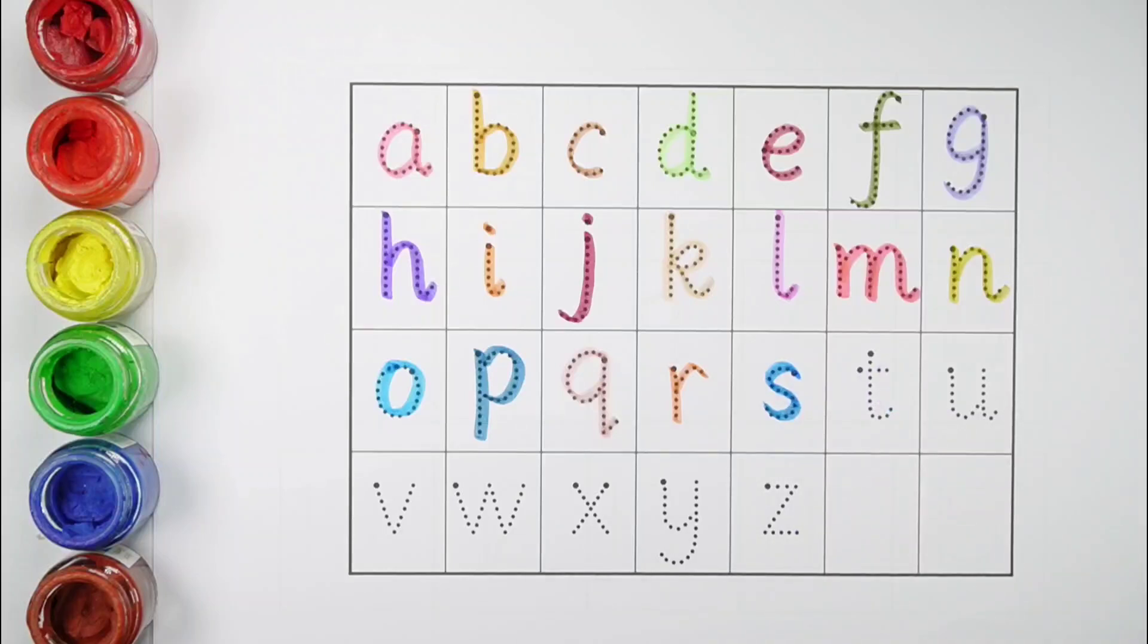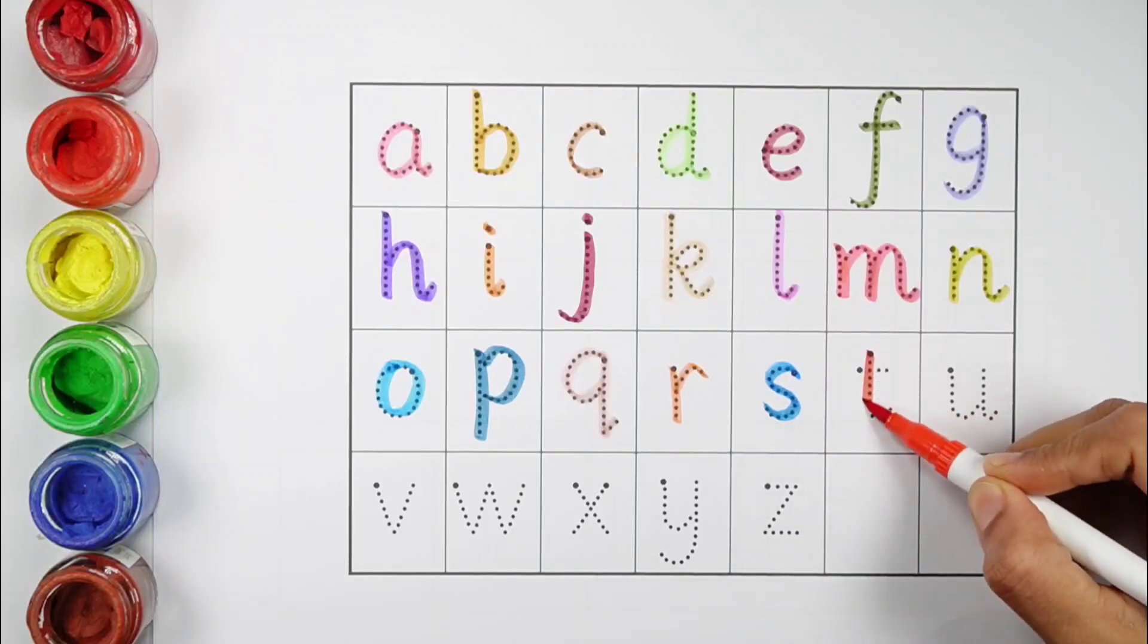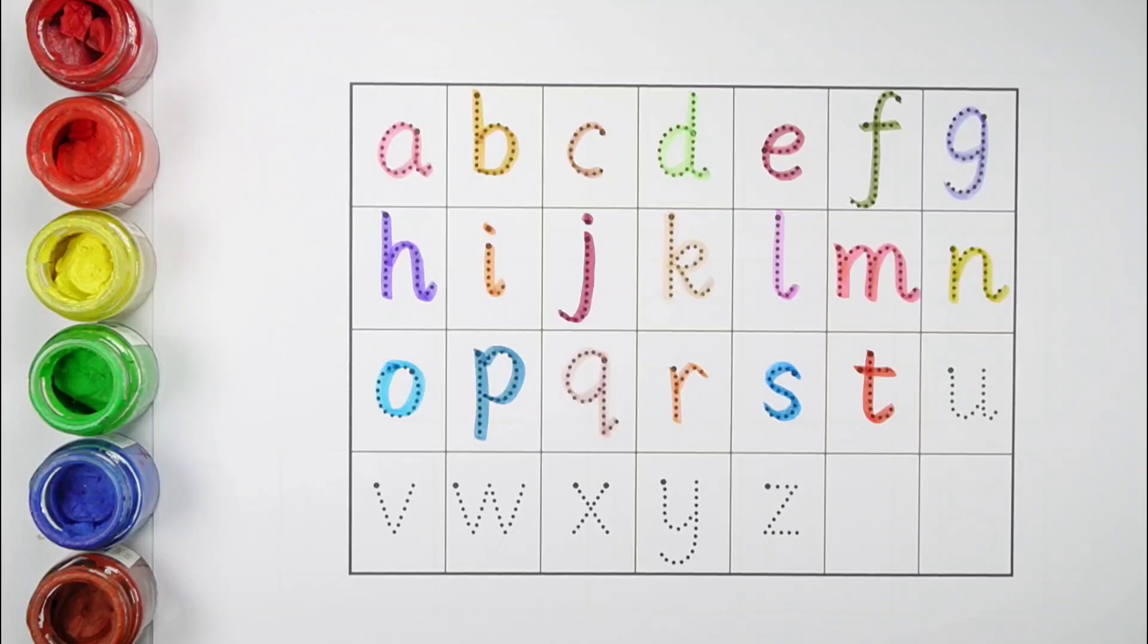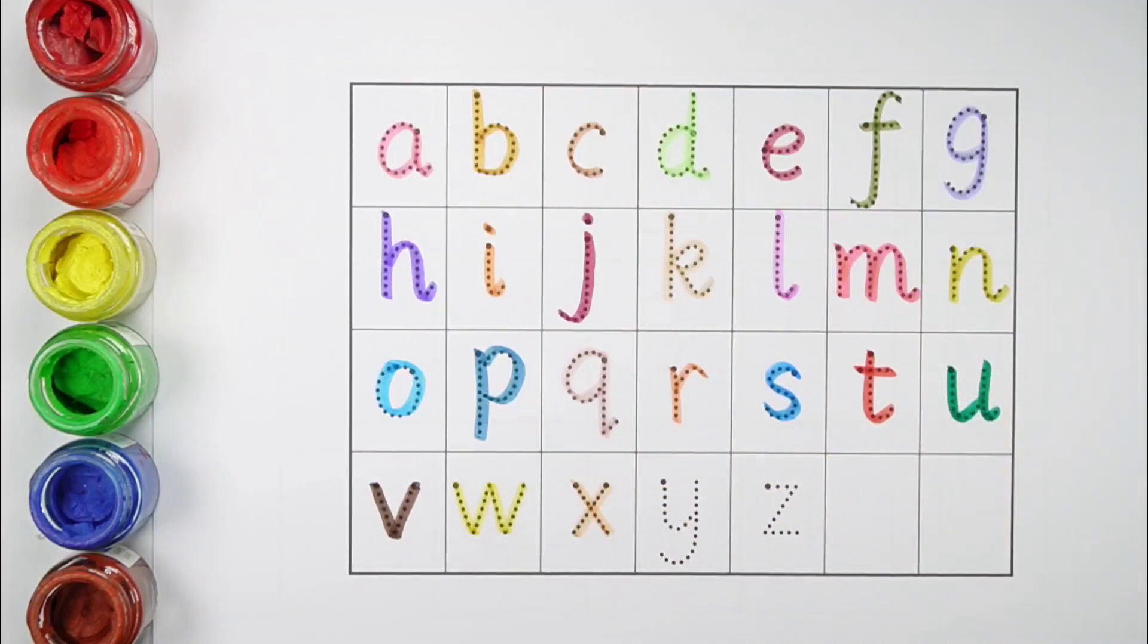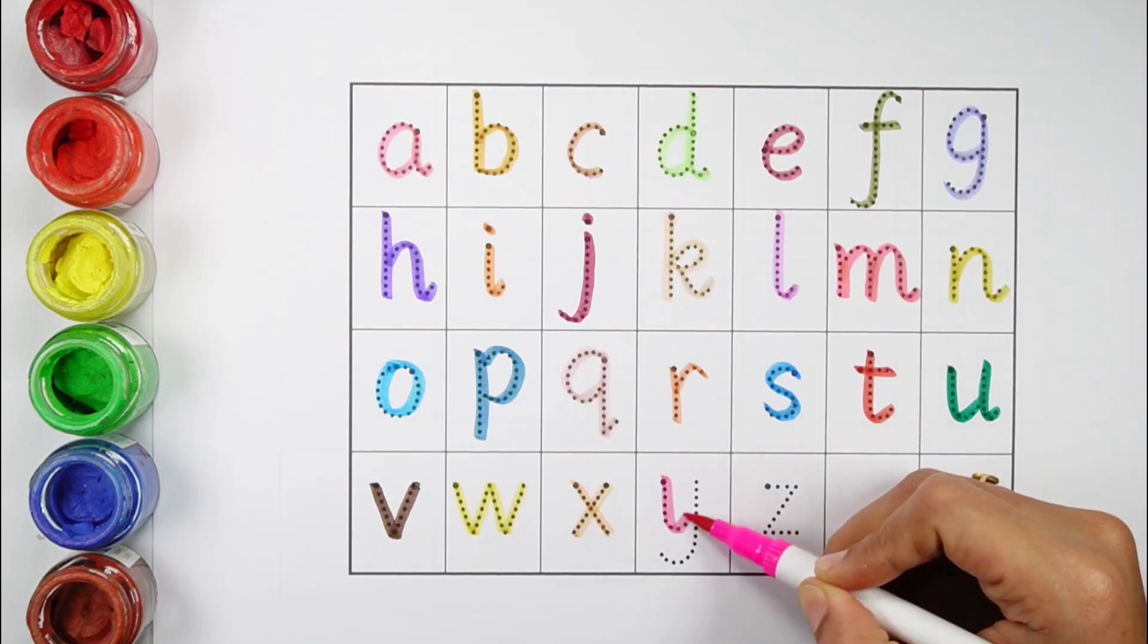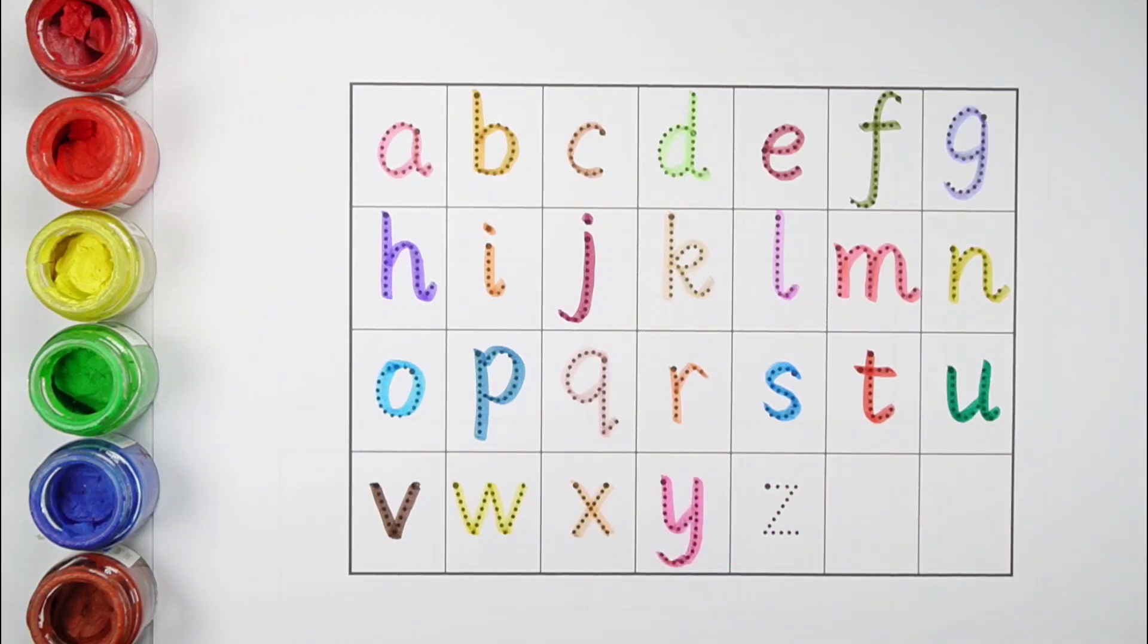S, S for sunflower. T, T for tap. U, U for unicycle. V, V for vulture. W, W for water balloon. X, X for x-ray fish. Y, Y for young. Z, Z for zebra.